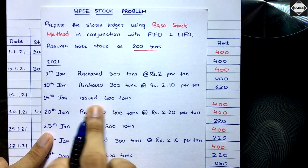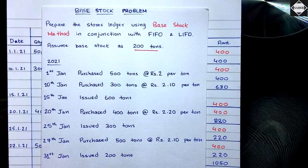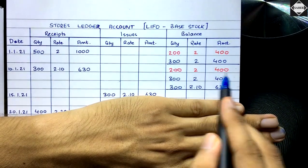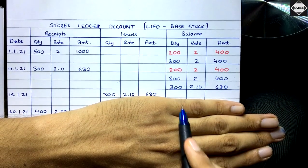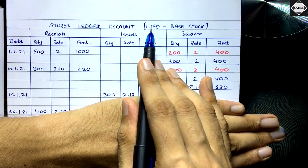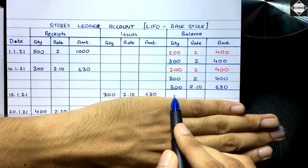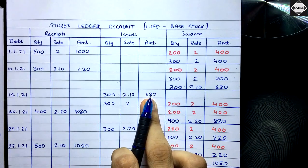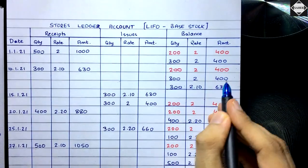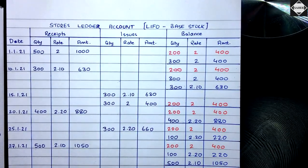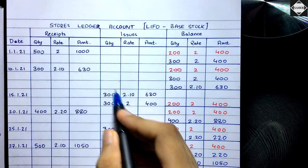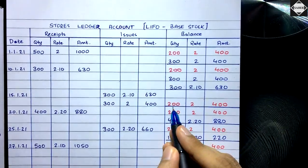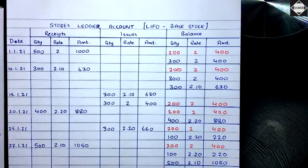On 15th January, issue of 600 tons — here's the LIFO difference. We have the red ink base stock (untouchable) and two free lots: 300 and 300. In LIFO — last in, first out — we touch the last lot first: 300 × ₹2.10 = ₹630. The remaining 300 comes from the next latest lot: 300 × ₹2 = ₹600. Balance remaining: 200 × ₹2 = ₹400 (the base stock).